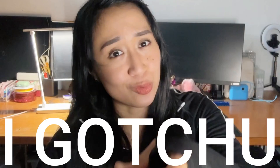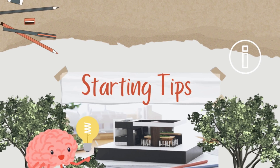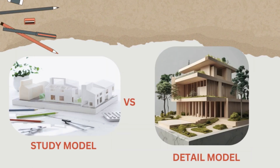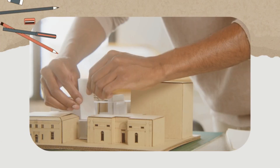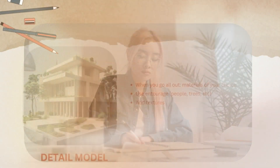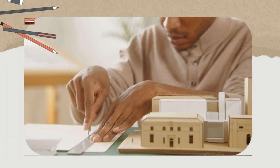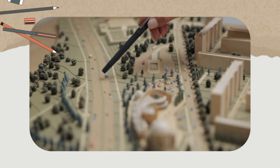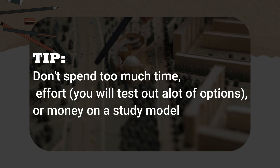So let's get started. Understanding study versus detailed models — before anything else, let's clarify the difference. A study model is used during the design process to explore ideas and iterations. It's not meant to be super detailed because you'll be doing a lot of testing and moving components around. A detailed model — what I call your final model — is where you go all out. This includes finished materials, entourage, and the full representation of your vision. Tip: don't spend too much time, effort, or money on a study model. Save the fancy stuff for your final.